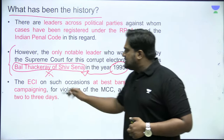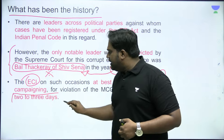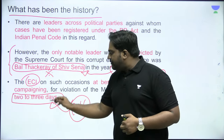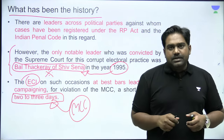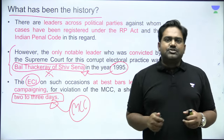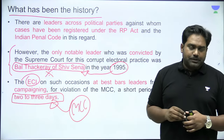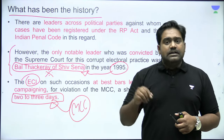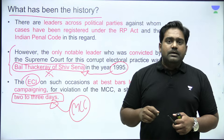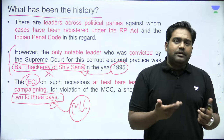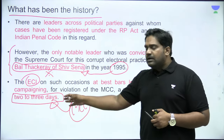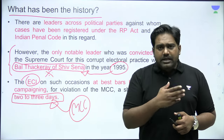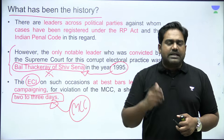The Election Commission is constrained here. Usually, for Model Code violations, it only debars the candidate from campaigning for two to three days — this is not a strict penal provision. If they were debarred from contesting elections for six years, that would have been a more effective option. Even though the law provides for it, it is often not employed by the Election Commission, which only treats this as a Model Code violation and debars the candidate from campaigning for two or three days.